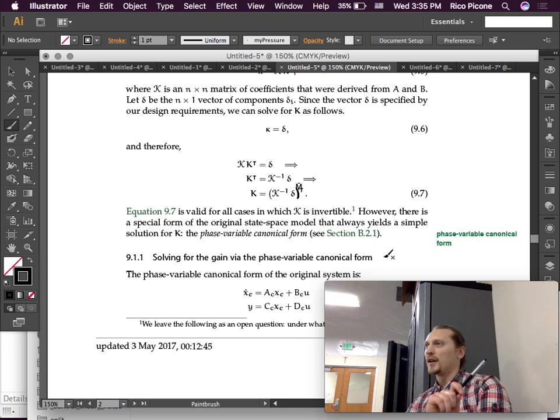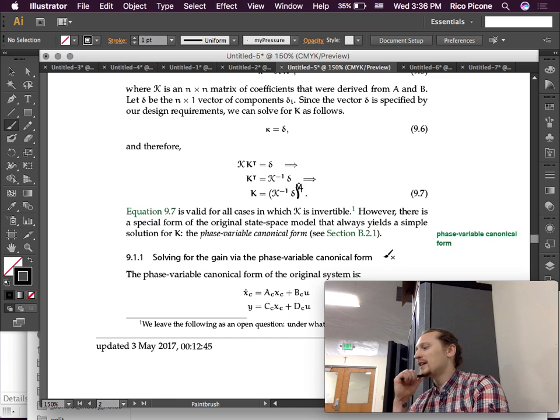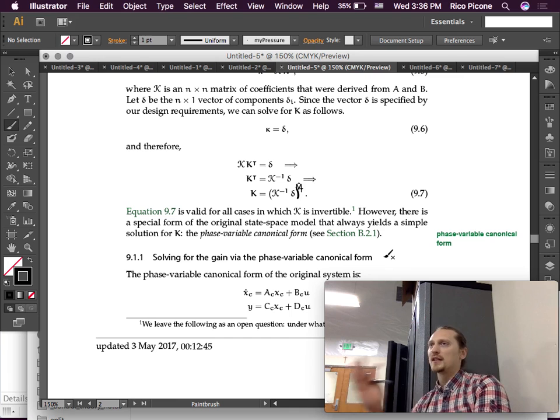It's probably the most common way of doing it, is putting it in phase variable canonical form. So I encourage you to look it up. And it is in your textbook, I believe, in the system dynamics textbook, I believe. It's definitely in the NEIS textbook. Anyways, it's on the internet. I know that.